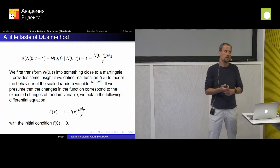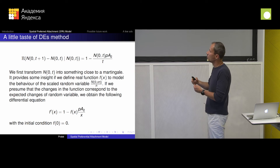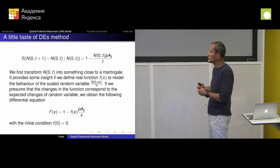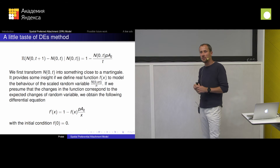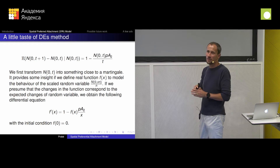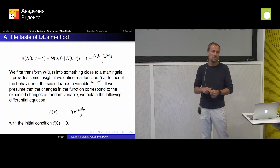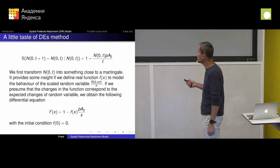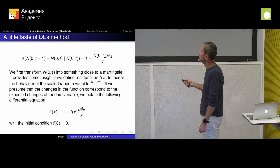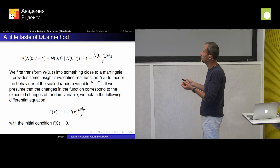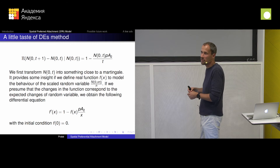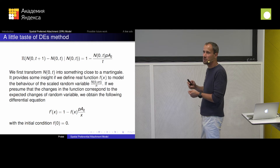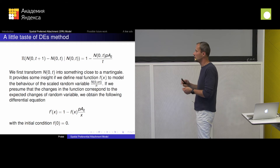Unfortunately, it's not a martingale — the expected difference is not zero. I expect to gain more isolated vertices each round. So what do we do? For now, we are physicists — I'm just applying a heuristic argument. Everything I say doesn't make any rigorous sense, but I want to get an intuition of what's going on. Once I get the intuition, I can make things more rigorous. So I say: first, let me pretend that my random variable changes as I expect. Let's pretend they are very well-behaved random variables — they go where I want them to go.